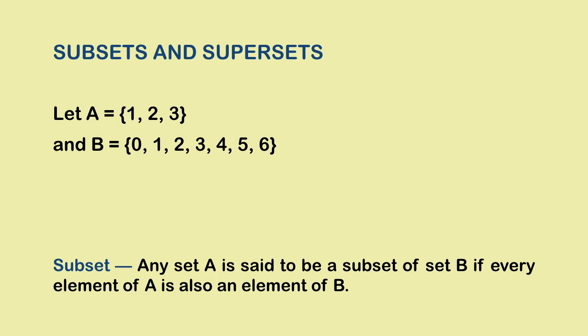Clearly every element that belongs to A also belongs to B. This is just an example but whenever there are any two sets, say sets A and B, such that every element of set A is also an element of set B, then A is called a subset of B.